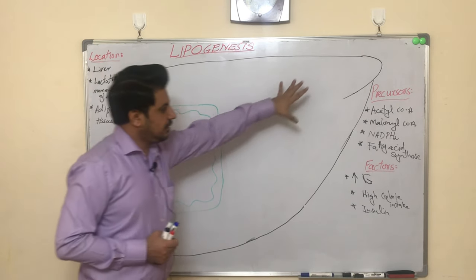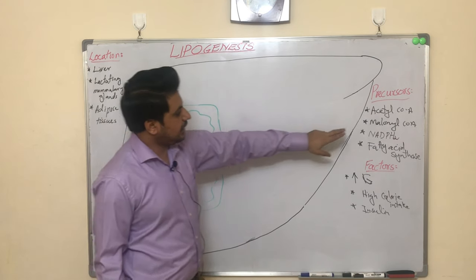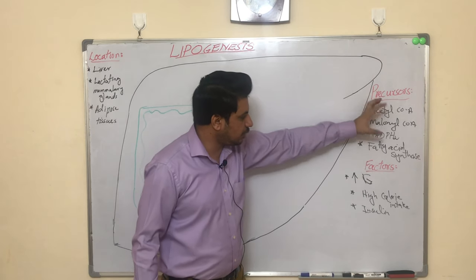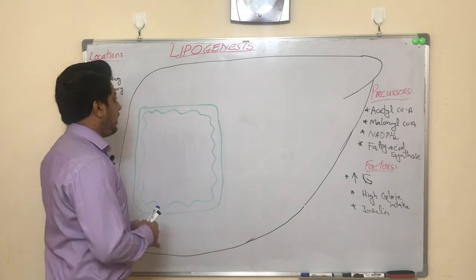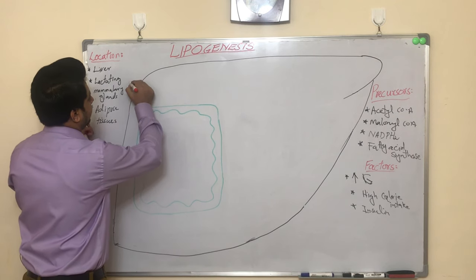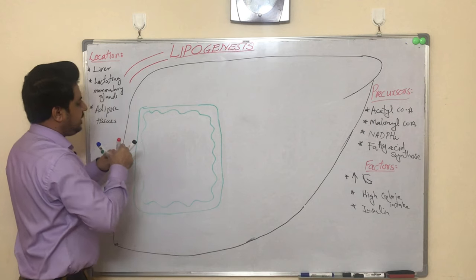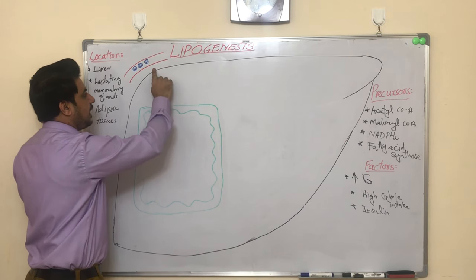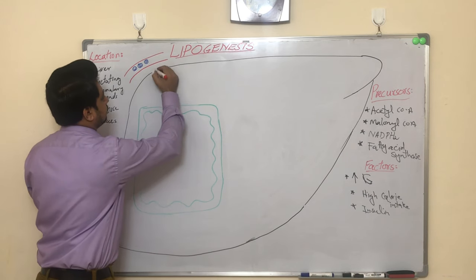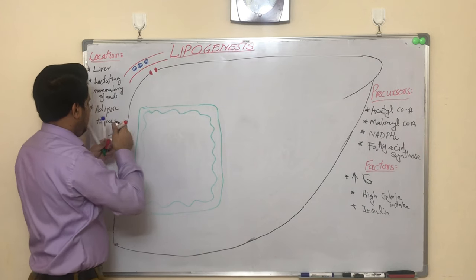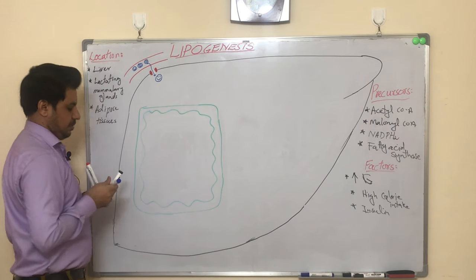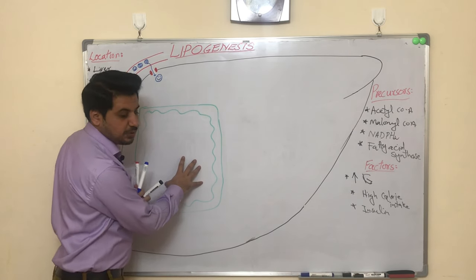Let's start the lipogenesis pathway. First, we must obtain malonyl-CoA and NADPH2, after which fatty acid synthase will become active. Here is the blood vessel with glucose molecules, and these glucose molecules, with the help of transporters, will enter into the hepatocytes.